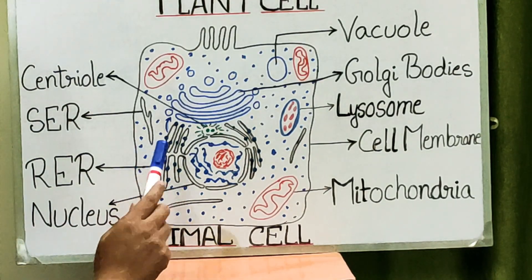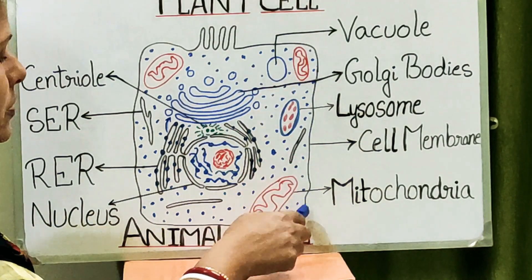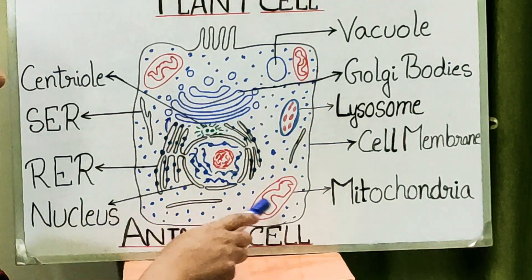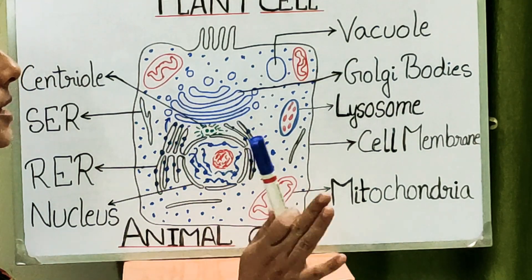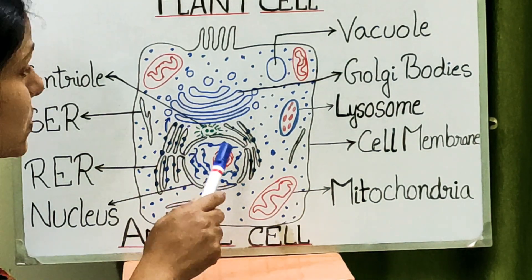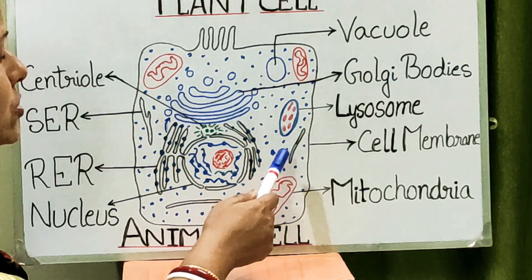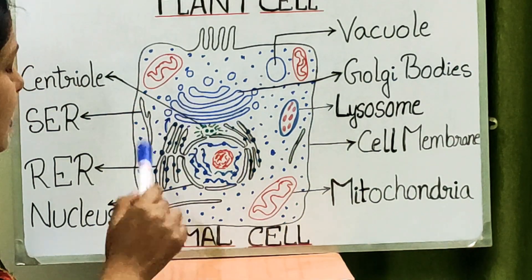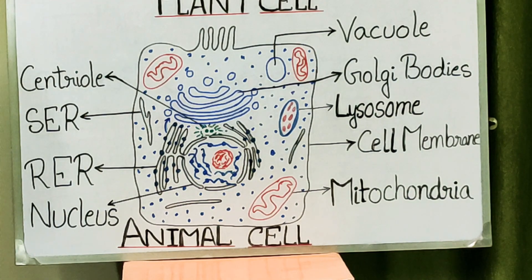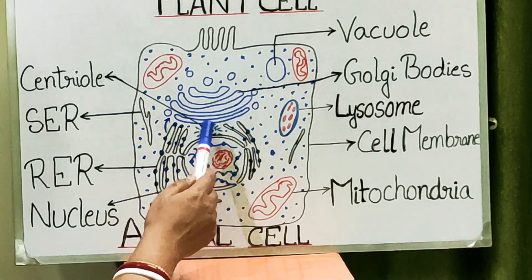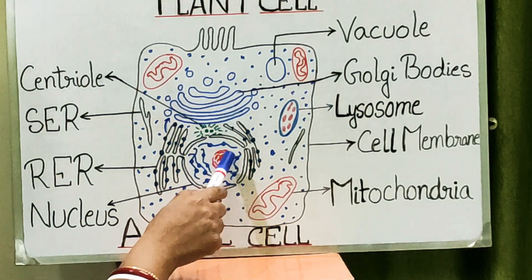Now let us discuss the animal cell. The animal cell is surrounded by only a single outer membrane — the cell membrane — and does not have a cell wall. This membrane is selectively permeable, allowing only useful substances to enter and harmful substances to exit. Inside the animal cell, many organelles are present similar to those of the plant cell. In animal cells, the nucleus is centrally located, whereas in plant cells it is towards the periphery.